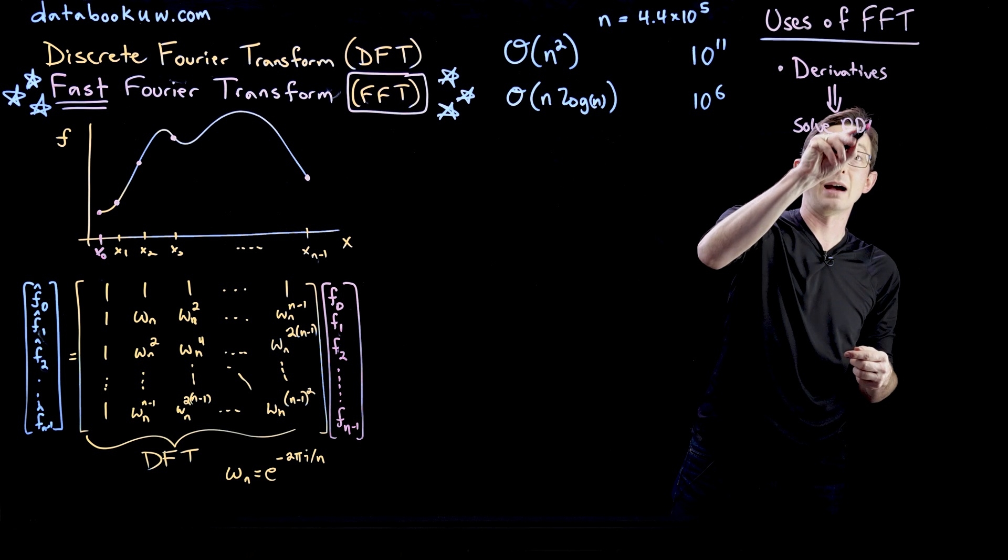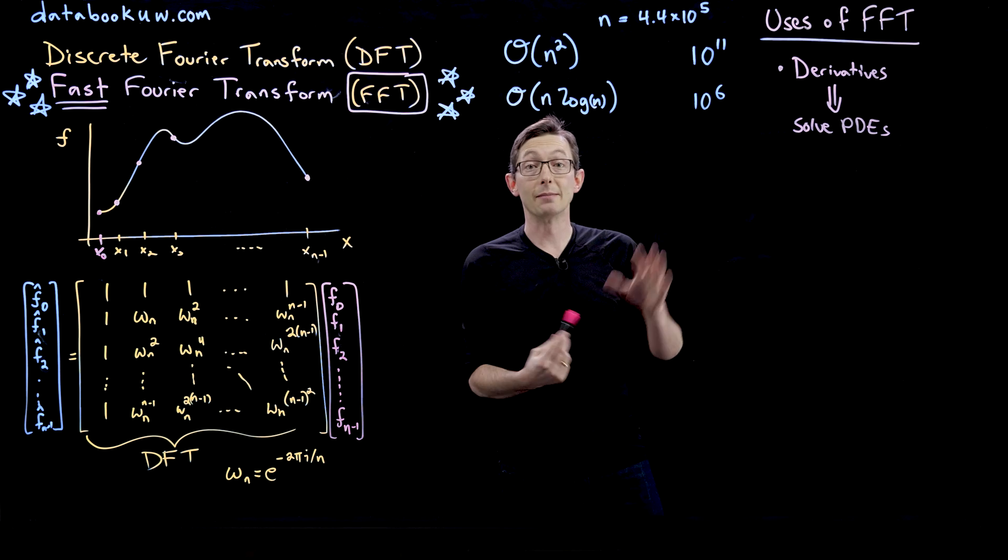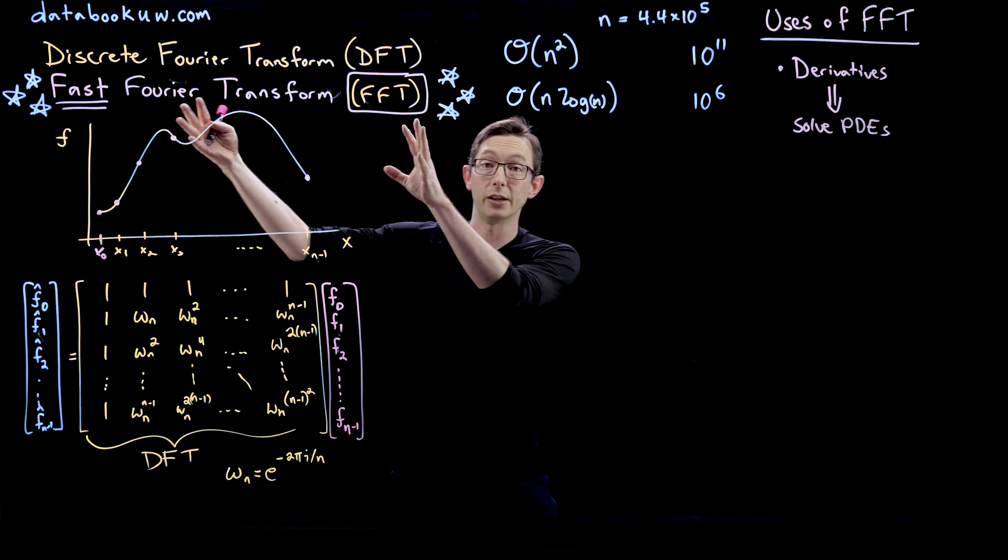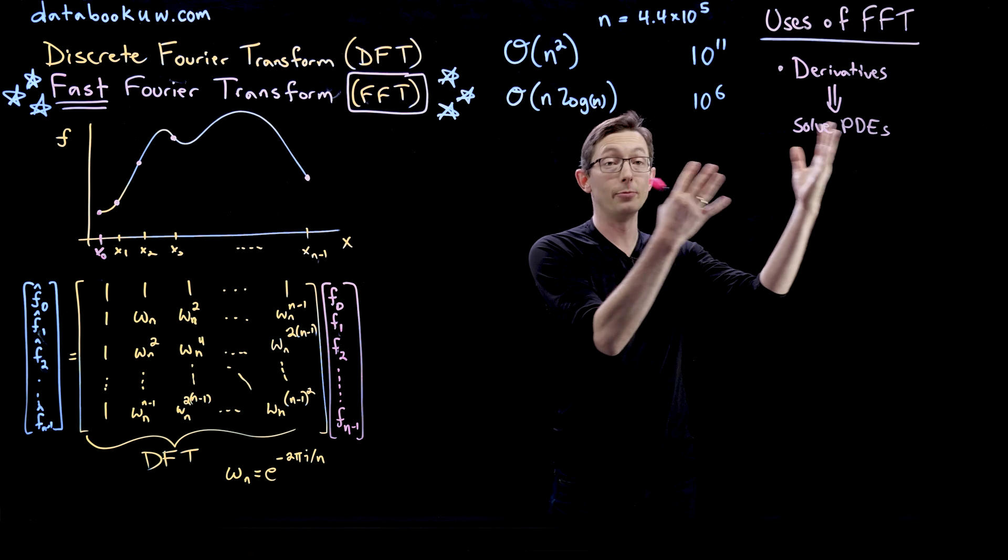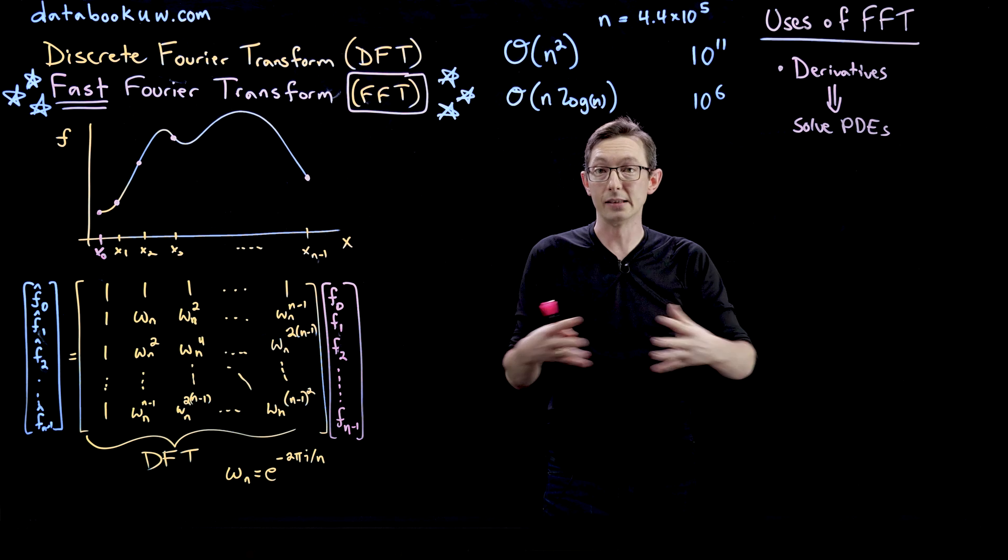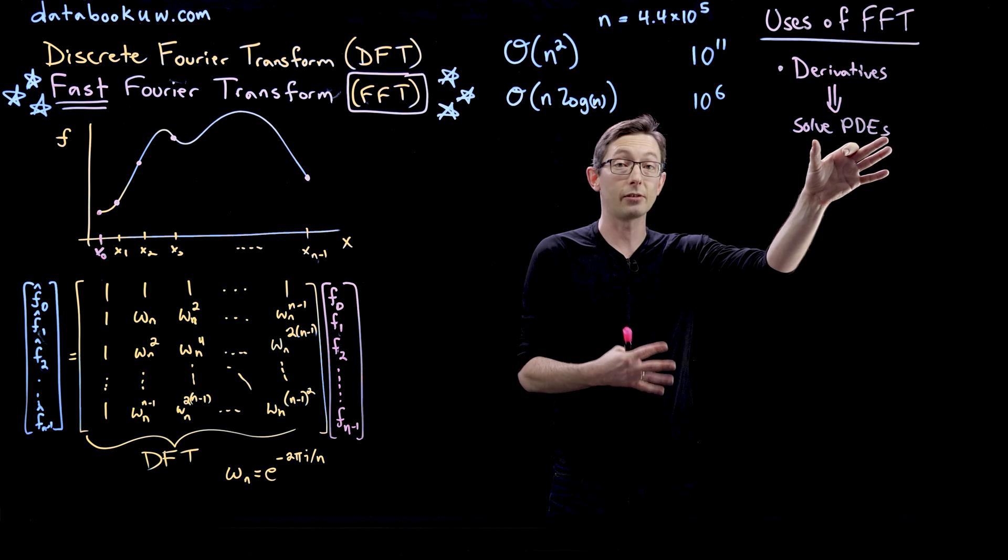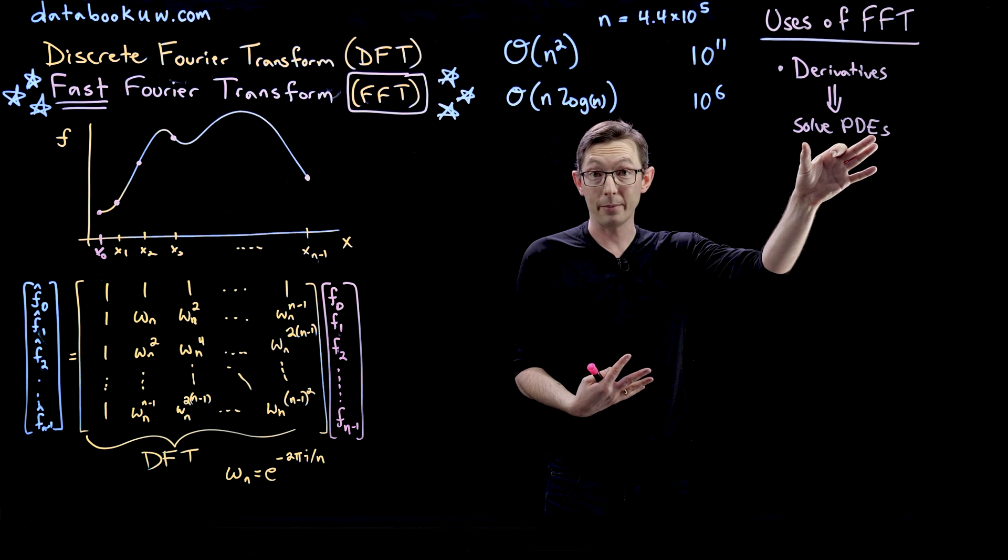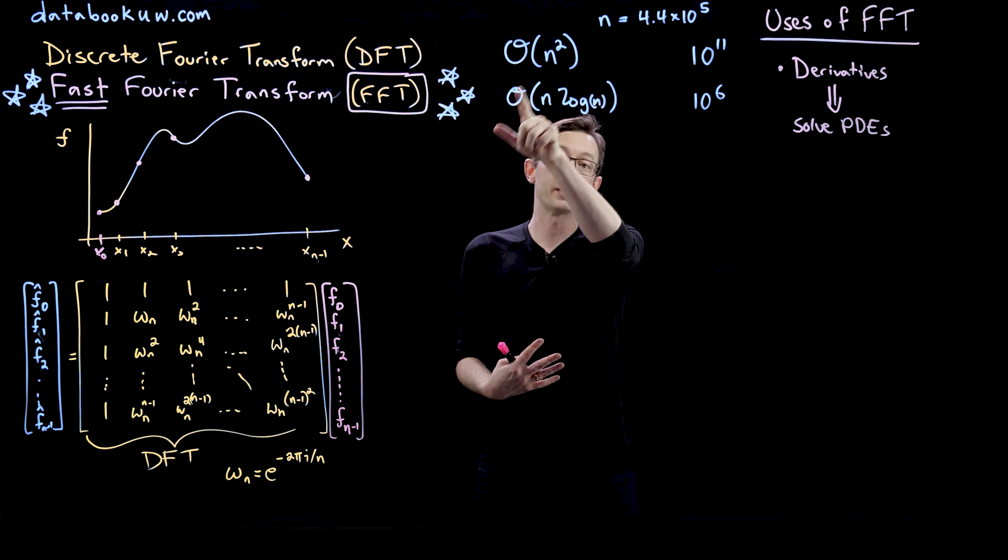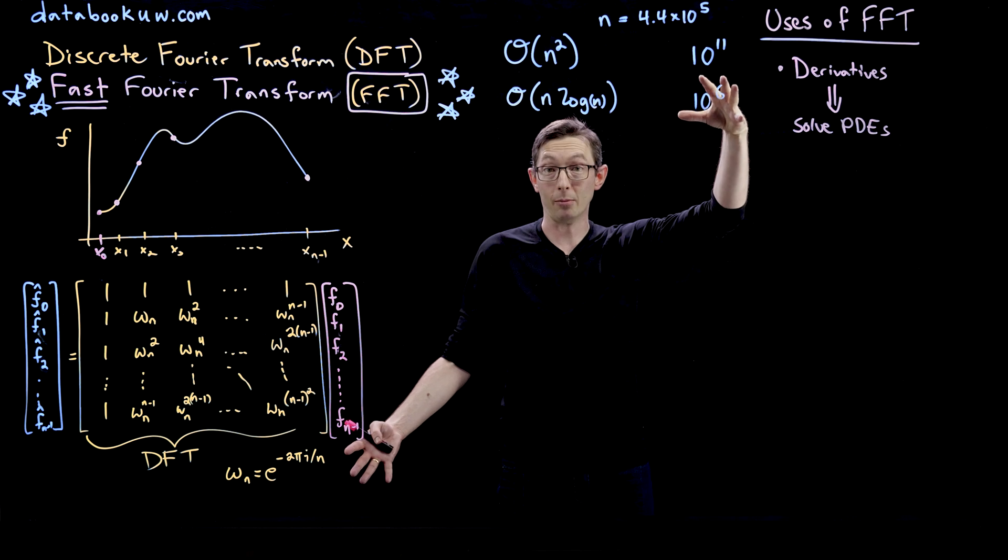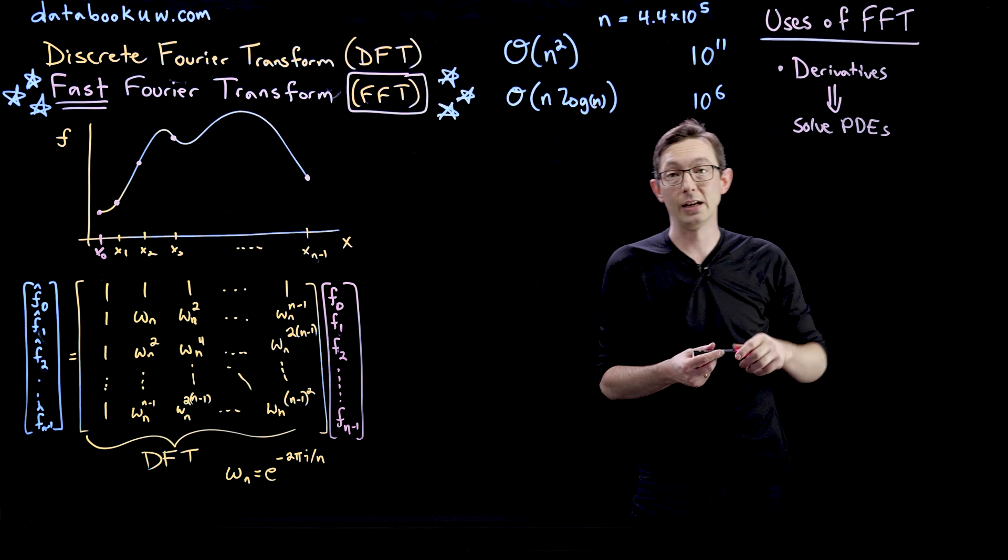And we can then use those derivatives to solve PDEs. In my field of scientific computing, this is a big deal. We use the fast Fourier transform to solve numerical PDEs, really complicated spatial temporal PDEs that describe real world phenomena. And because of this favorable scaling, we can solve really, really big problems.